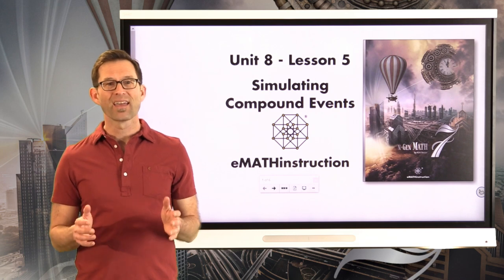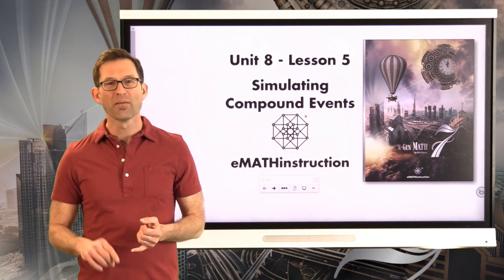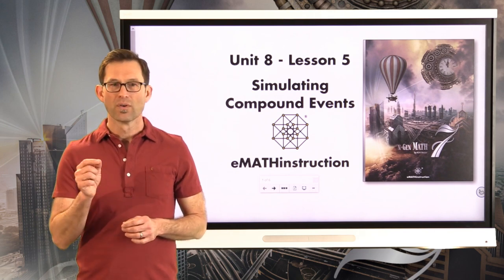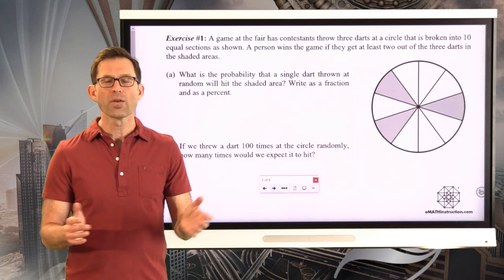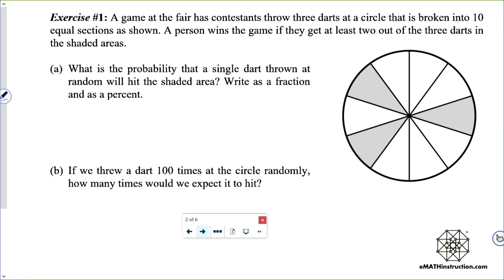This is a very long packet of worksheets we've got for you because we've got random number tables and stuff like that, but we'll show you how to use them in this particular lesson. Let's get into exercise number one. A game at the fair has contestants throw three darts at a circle that's broken into ten equal sections as shown. The person wins the game if they get at least two out of the three darts in the shaded area.